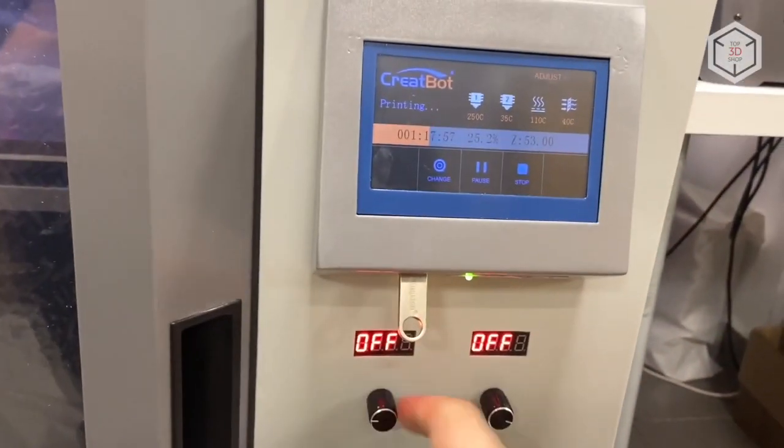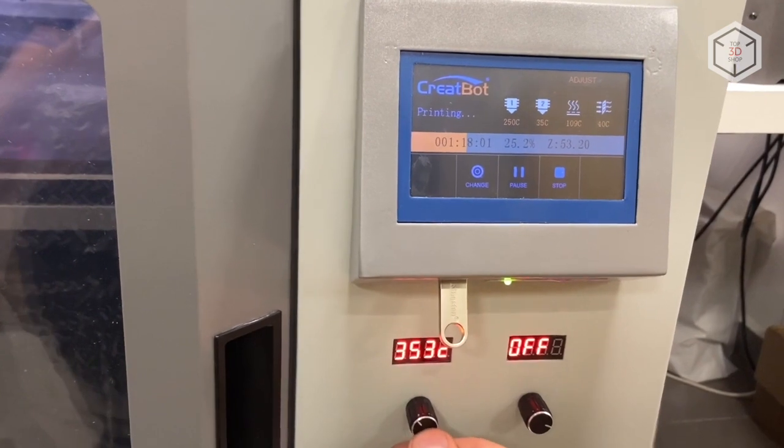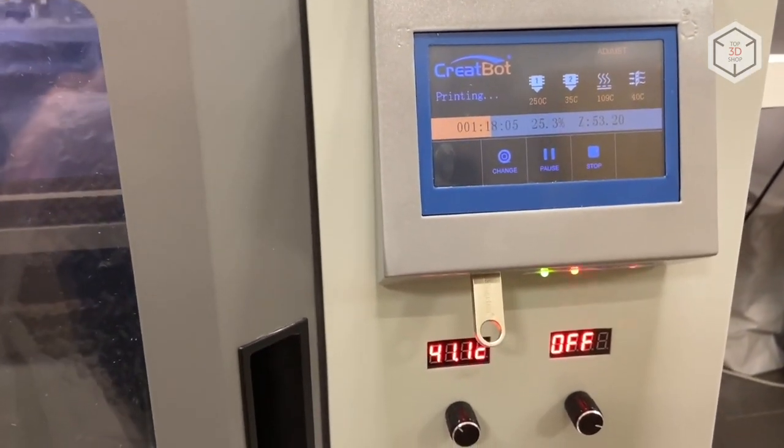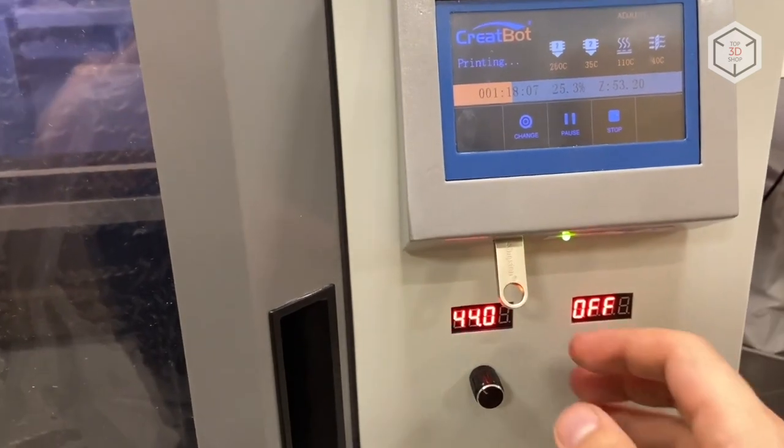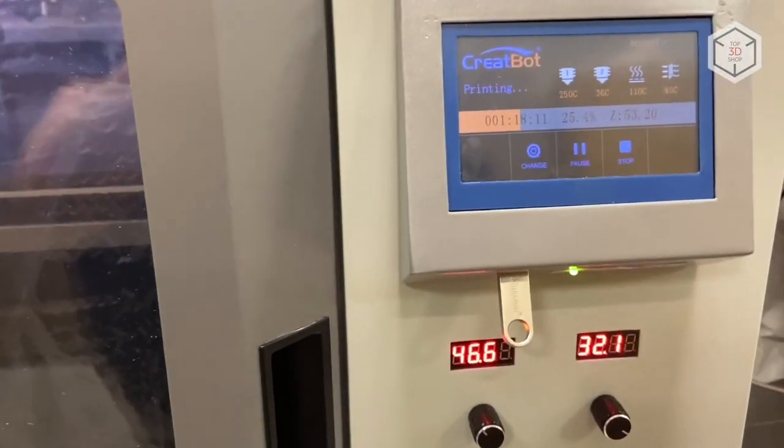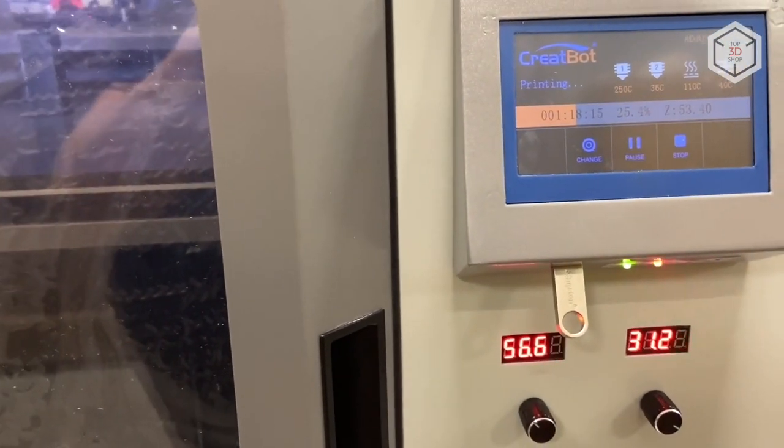First to catch the eye on the front panel are the two knobs controlling the hot air blowing system, with each regulator responsible for a dedicated nozzle. When the knob is engaged, the compressor turns on and pumps hot air directly onto the model. This is an indispensable feature when printing with high temperature materials that require additional sintering, such as PEEK, PEKK, and ULTEM.